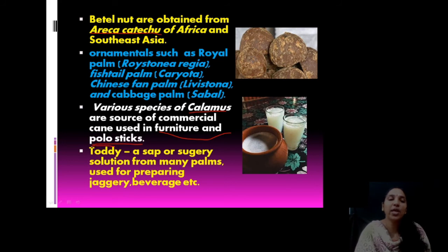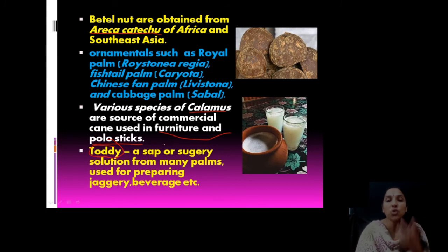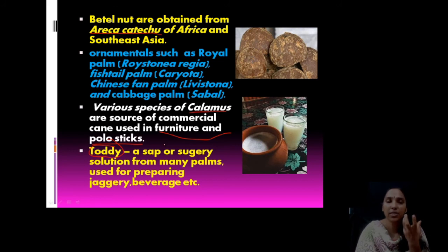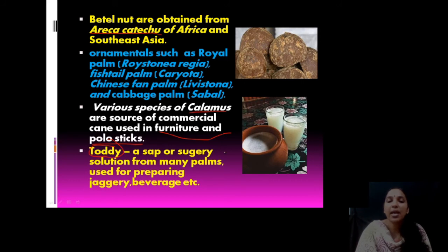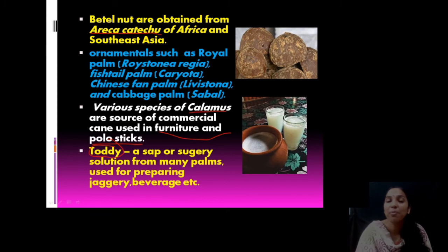Toddy — known as kalli — is a sap or sugary solution obtained from many palms. By cutting the tender part at the apex in the crown, a sugary substance oozes out and is collected in a pot — that is toddy. It is very common in Kerala and is also used for preparing jaggery and beverages. Jaggery is known as chakara or karupatti.